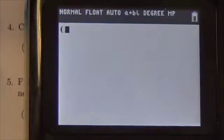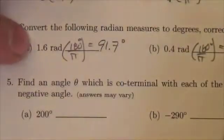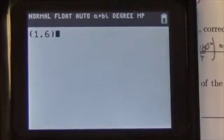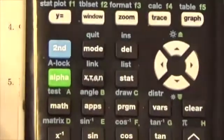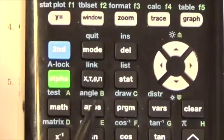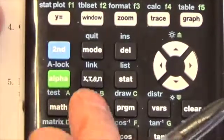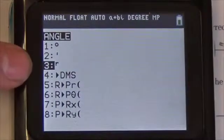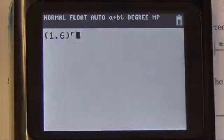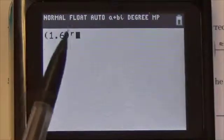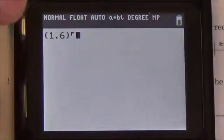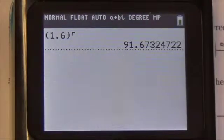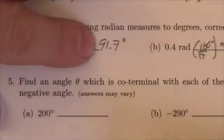So now what I'm going to do is in brackets here, I'm going to enter in the angle 1.6. Then I'm going to go to my angle menu. My angle menu here is right above my apps button. So second, apps, to get into my angle menu. And what I can do here is go down to number 3. And that little symbol there, when I choose that, tells the calculator that whatever this is, it's in radians. Because my calculator is in degree mode, when I press enter, it gives me the answer in degrees, 91.7.